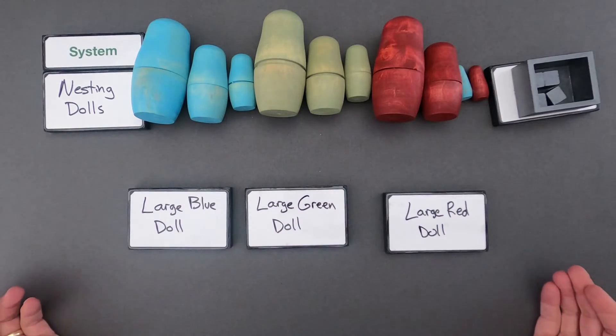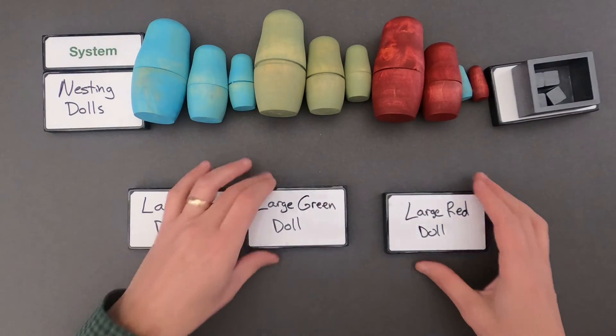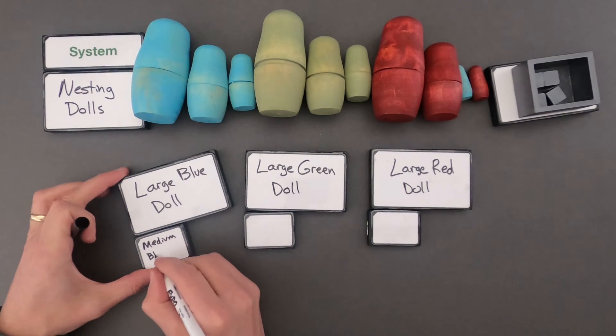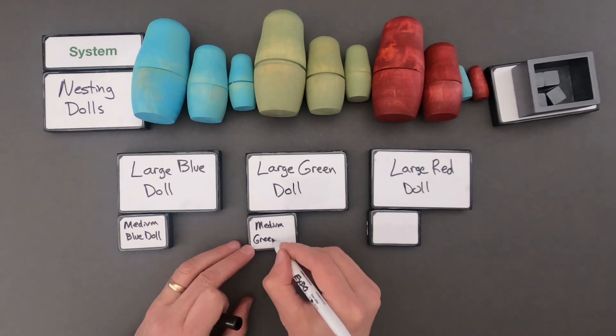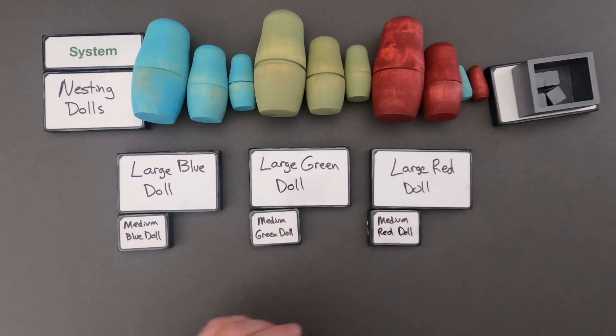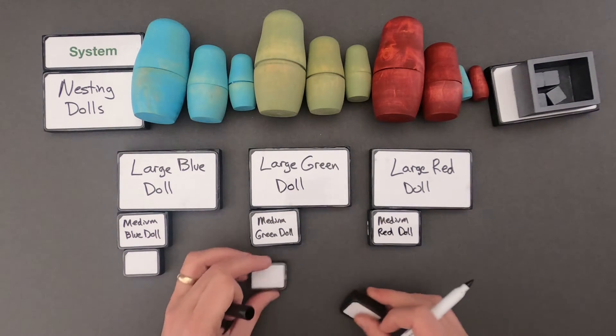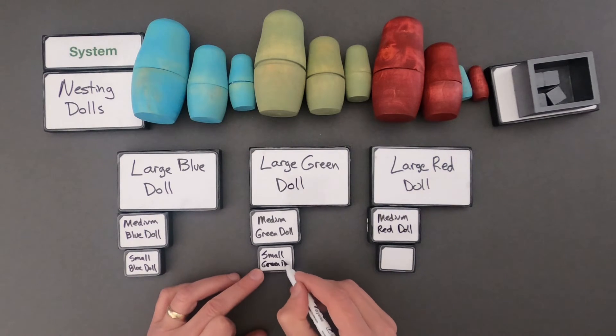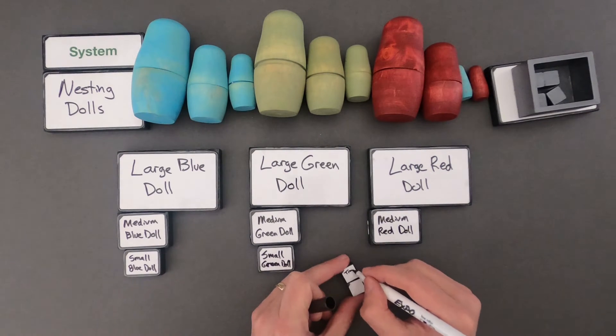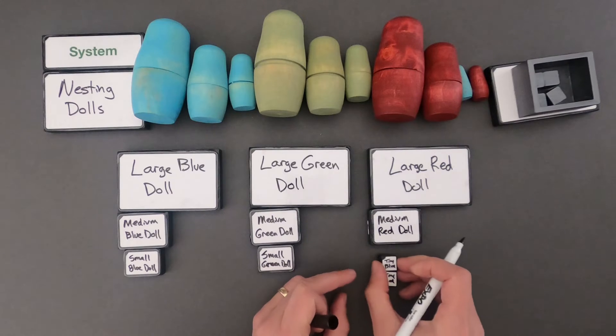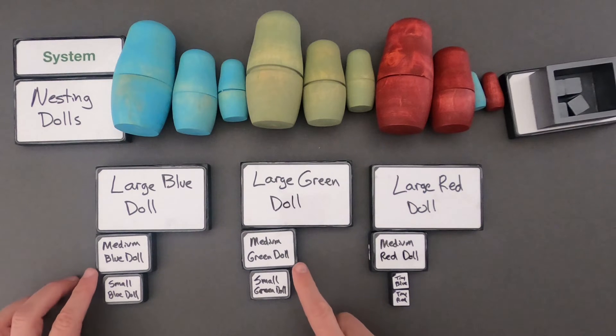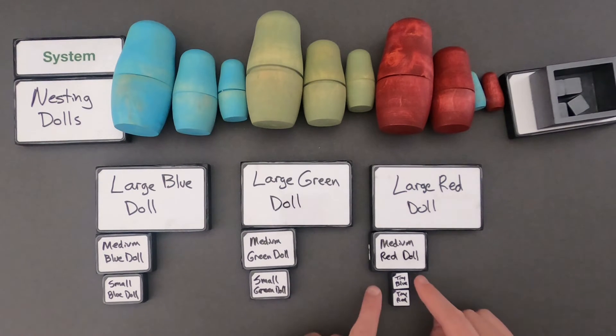I would then break these dolls into their hierarchy of systems. So I broke the large green and red and blue dolls into medium dolls, small dolls, and then I had these really tiny dolls that are over here.